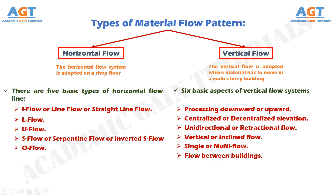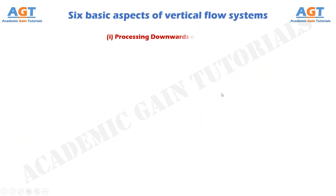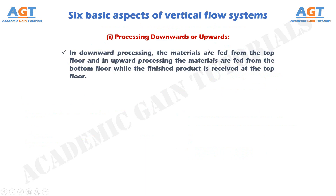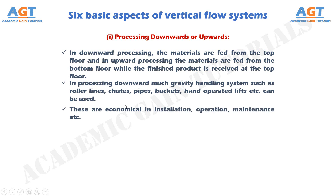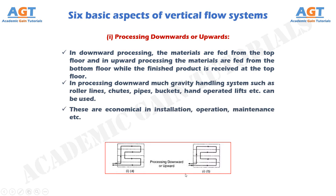Number 1: Processing downward or upward. In downward processing, the materials are fed from the top floor and the finished product is received at the bottom floor. In upward processing, the materials are fed from the bottom floor while the finished product is received at the top floor, as we can see in these two figures. In processing downward, many gravity handling systems such as roller lines, chutes, pipes, buckets, and hand-operated lifts can be used. These are economical in installation, operation, and maintenance.